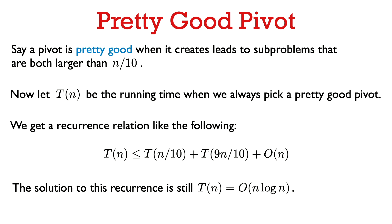Let T(n) be the running time of QuickSort assuming we always pick a pretty good pivot. Then T(n) ≤ T(n/10) + T(9n/10) + O(n), where the first two terms represent the worst case for the two sub-problems and O(n) is the partition cost. Working out this recurrence still gives a solution of O(n log n).